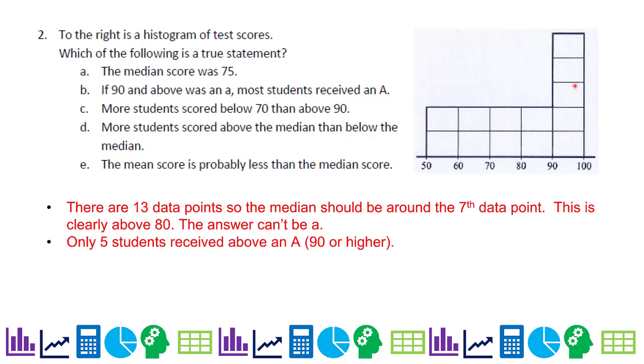For B, if 90 and above was an A, most students received an A. That's not true. Only five out of 13 received an A.